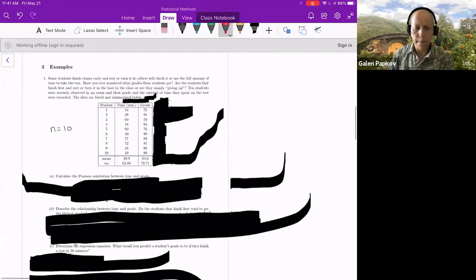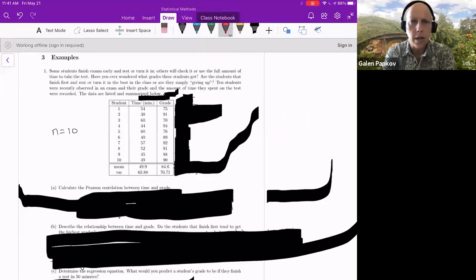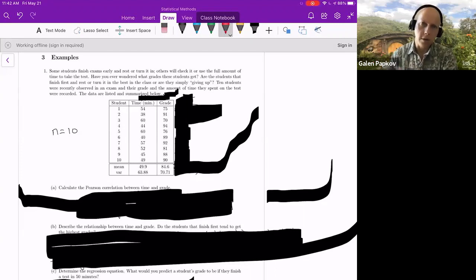Let's actually get to applying this. We'll take a look at the first example here. It says some students finish exams early and rest or turn it in, and others will check it or use the full amount of time to take the test. Have you ever wondered what grades these students get? Are the students that finish first and turn it in the best in the class, or are they simply giving up? And so this was an actual investigation that I did. I was curious if the best students tend to know their stuff, they finish fast and they just turn it in, or do they know their stuff, but they do it quickly and then they spend time to check maybe even triple check themselves. I wasn't really sure of the answer. And so here is a subsample of what I got. Ten students were recently observed in exam and their grade and the amount of time that they spent on the test were recorded. The data are summarized in this table below.